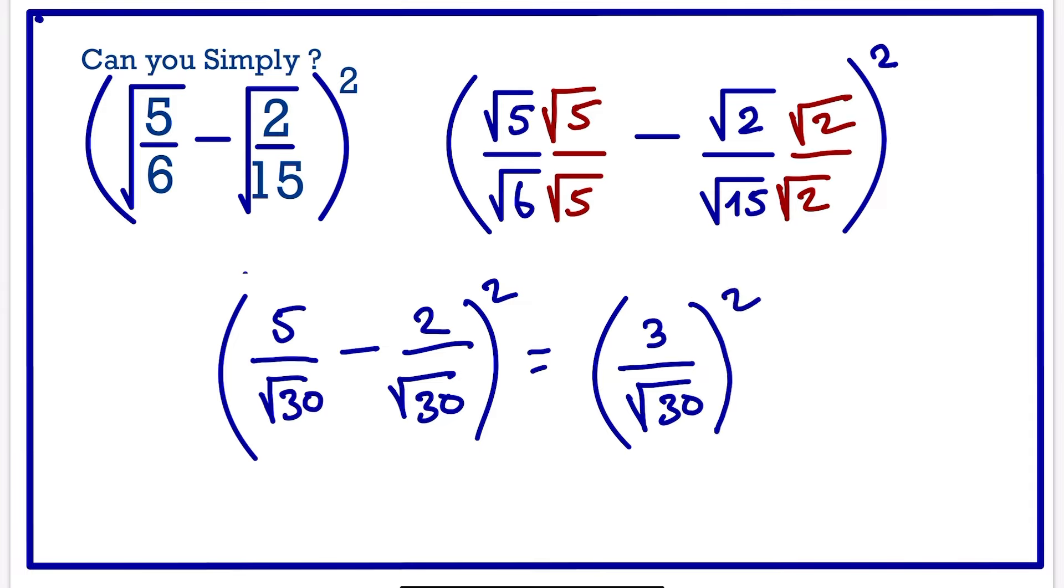We can square both. 3 squared will give us 9 over, if we square this, root 30 squared. The square and the square will cancel. We are left with 30.